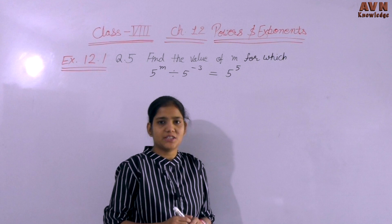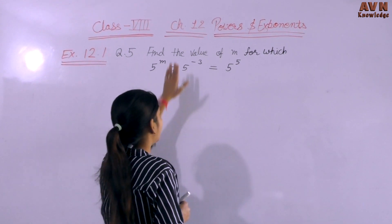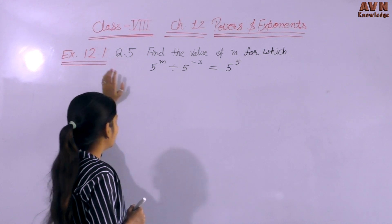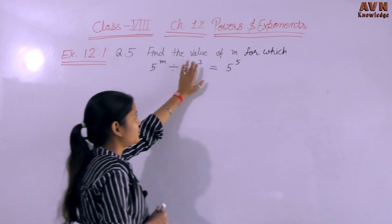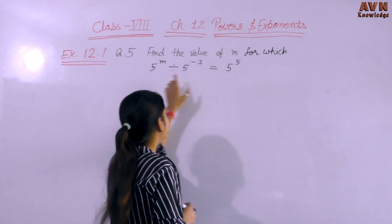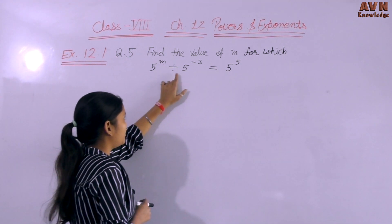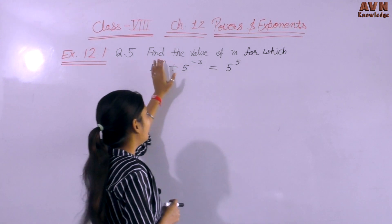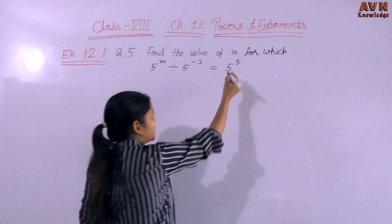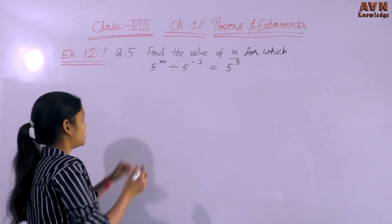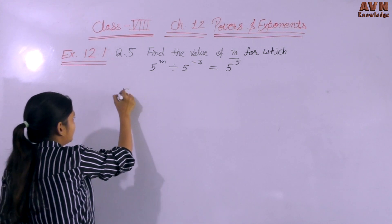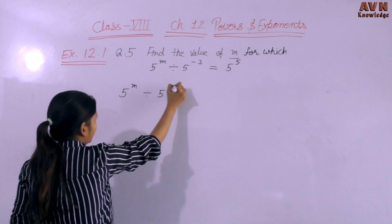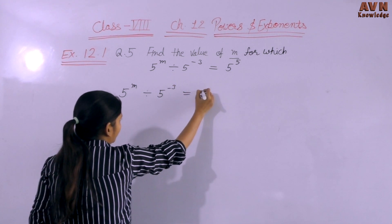Hello students, welcome to our channel ABN Knowledge. Chapter 12: Powers and Exponents, Exercise 12.1, Question No. 5 — find the value of M for which 5 raised to the power M divided by 5 raised to the power minus 3 equals 5 raised to the power 5.